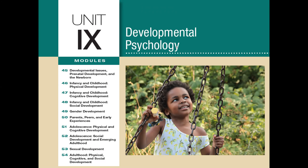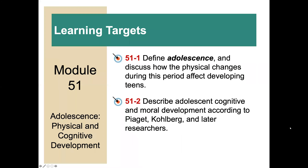Welcome to Unit 9, Developmental Psychology. We are on Module 51, Adolescence, Physical and Cognitive Development. This is a really short module. There are only two learning targets. The first one is to define adolescence and discuss how the physical changes during this period affect developing teens. The second one is to describe adolescent cognitive and moral development according to Piaget, Kohlberg, and later researchers.